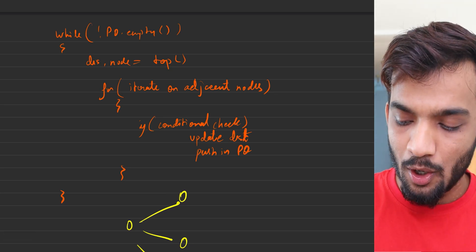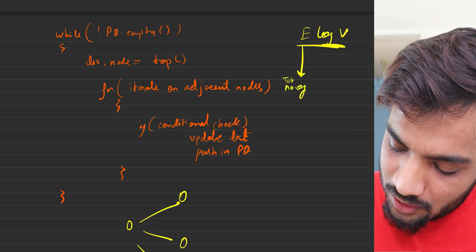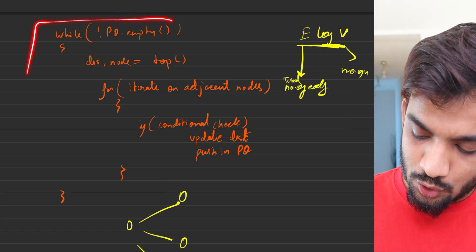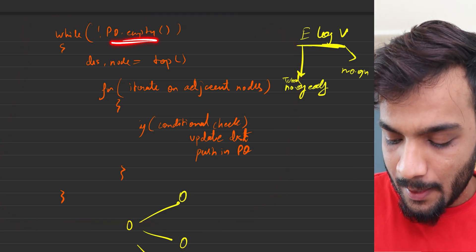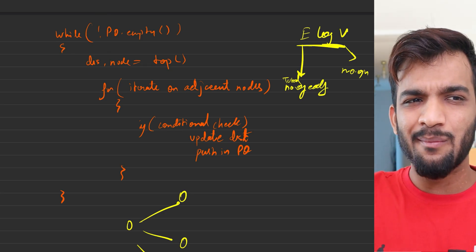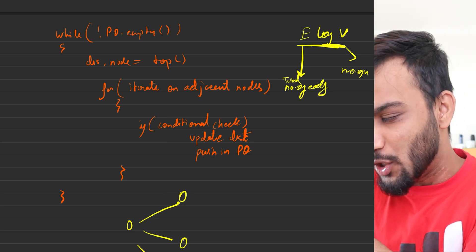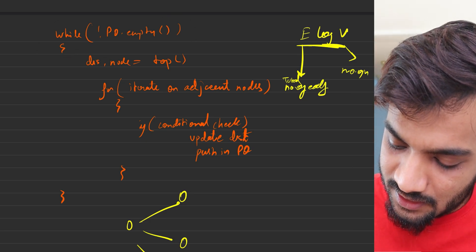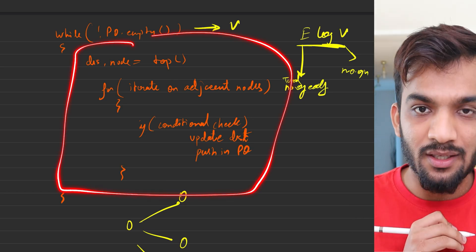A queue is not preferred because it has much higher time complexity. With a priority queue we always travel to the minimal nodes first — minimal, minimal, minimal — so we ultimately reach all minimums efficiently. Now the next topic: time complexity. Why is it E log V, where E is the total number of edges and V is the number of nodes? Looking at the pseudocode of the priority queue: the while loop runs at most V times, since we're following a greedy strategy visiting each node minimally.